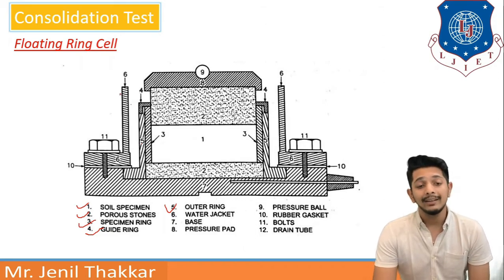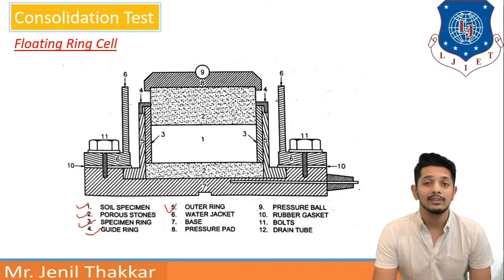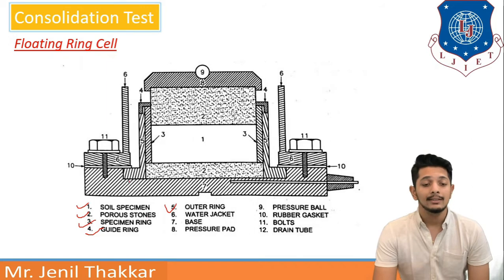Furthermore, water jackets are provided at item number 6. You can see that these are the walls or we can say water jackets, they provide water. And below that there is a base kept as well as pressure pad is kept here.